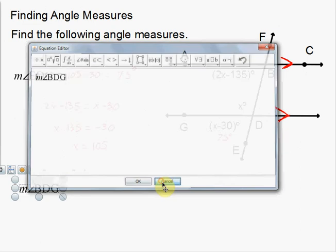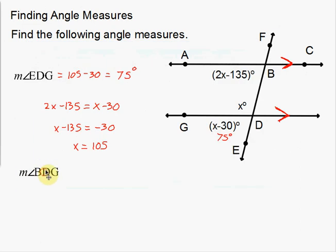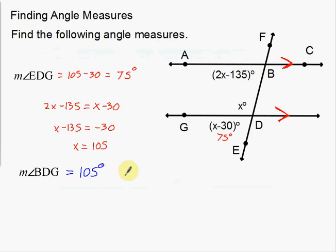Now I'm going to find BDG. BDG is this little X right here. Did I already find out what X was? Yes — from the work I did previously, X is equal to 105. So BDG is just X, which means BDG equals 105 degrees. I already did all the work! What's nice about these problems is that they're related to one another, so work from a previous problem is still relevant to the other problems you do.